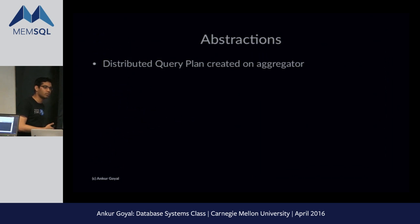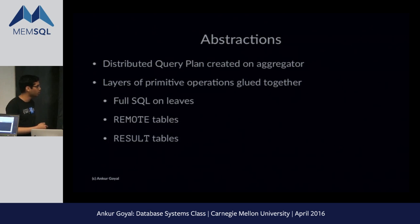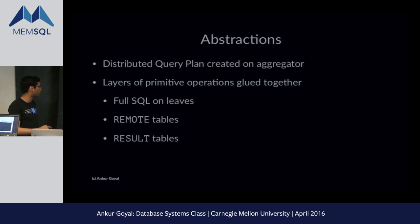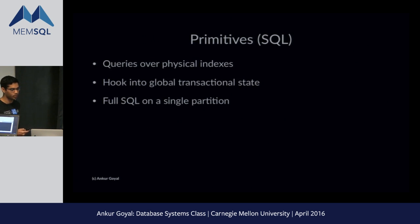What is the vocabulary we use at MemSQL in distributed query execution? There's a distributed query plan created on the aggregator that glues together layers of primitive operations. Full SQL is available on each leaf — you can tell a leaf to do SELECT COUNT(*) over its chunk of data, or run a GROUP BY or JOIN over locally held data. There are also two non-standard abstractions: remote tables, which are how a query pulls reshuffled data, and result tables, which let you pre-compute and push data. The SQL primitives include queries over physical indexes, access to global transactional state, and access to both row stores and column stores.